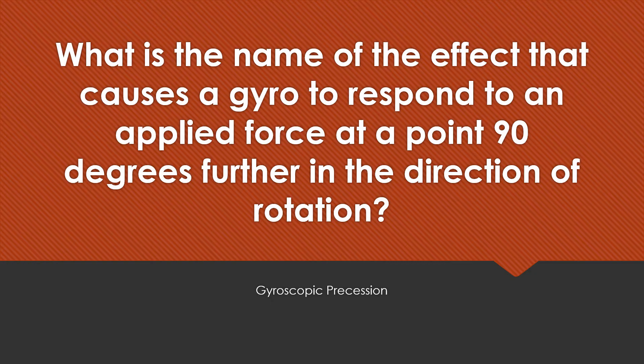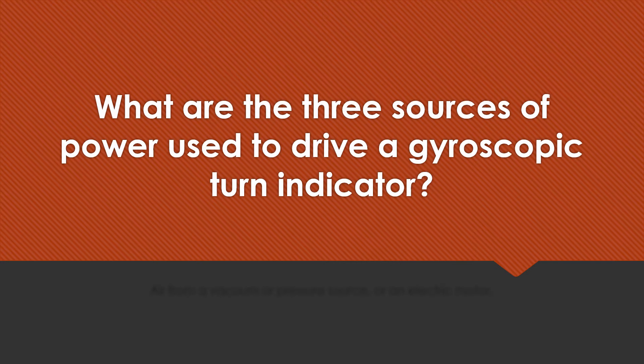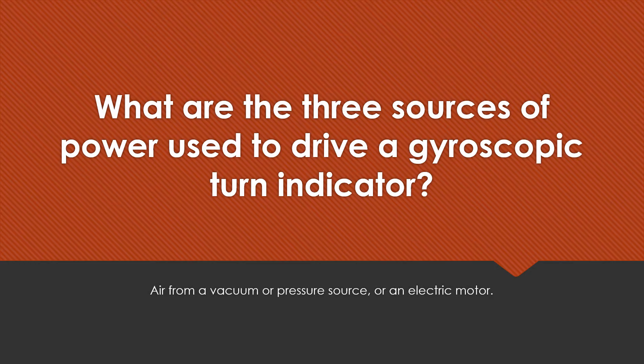Gyroscopic precession. What are the three sources of power used to drive a gyroscopic turn indicator? Air from a vacuum or pressure source, or an electric motor.